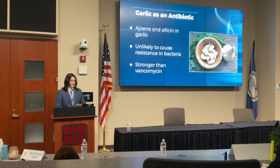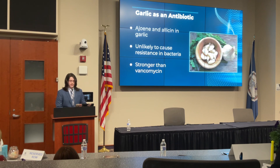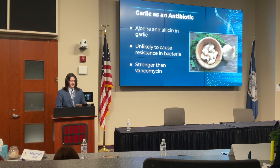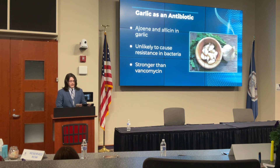When considering garlic as an antibiotic alternative, the main chemicals that reveal its inhibitory effects are ajoene and allicin. Both of these chemicals, mainly released after garlic has been crushed, have reported antimicrobial activity. One study by Gopher et al indicated bacterial resistance from garlic to be extremely unlikely, meaning its use would not simply add more resistance to the already resistant bacteria in the world. Another study found that Staphylococcus aureus bacteria was more sensitive to garlic than vancomycin, a synthetic antibiotic, which further supports the idea that antibiotic resistance is becoming more prevalent over time.